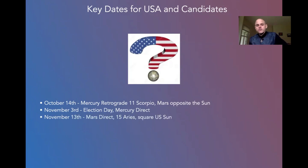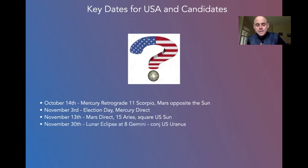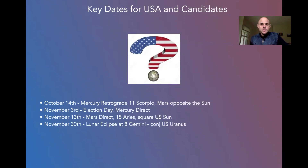November 13th, Mars goes direct at 15 Aries, which is exactly squaring the U.S. sun in Cancer. That's a big one. Mars direct — Mars gets fired up, the planet of aggression, conflict, drive, desire, squaring the U.S. sun. The lunar eclipse comes in November 30th at 8 Gemini, conjunct the U.S. Uranus. Uranus is the planet of revolution, freedom, eccentrism, sometimes chaos, surprise, uncertainty.